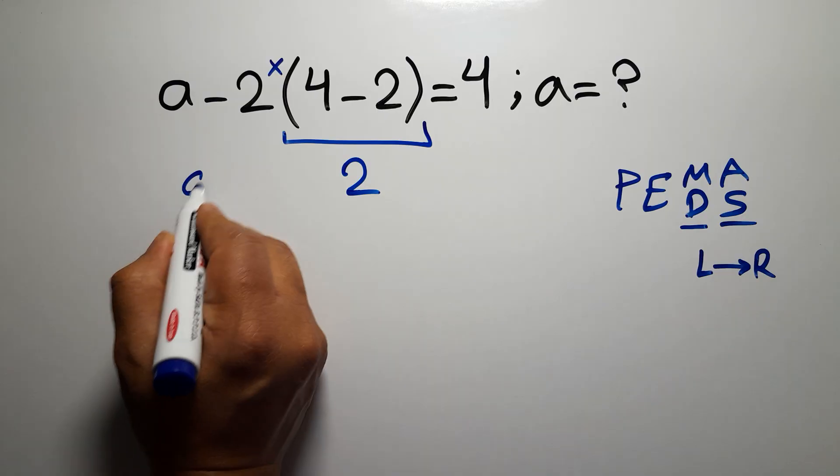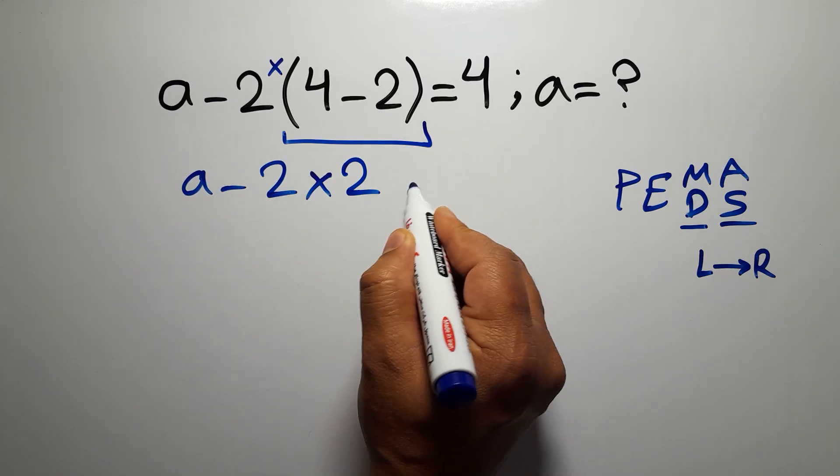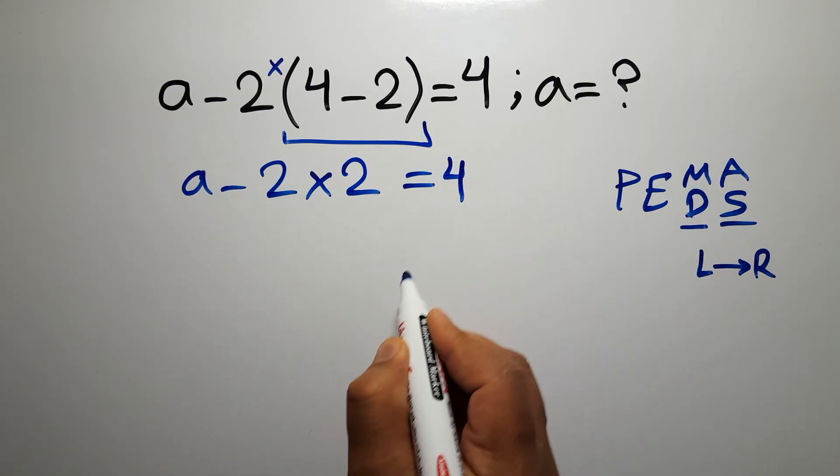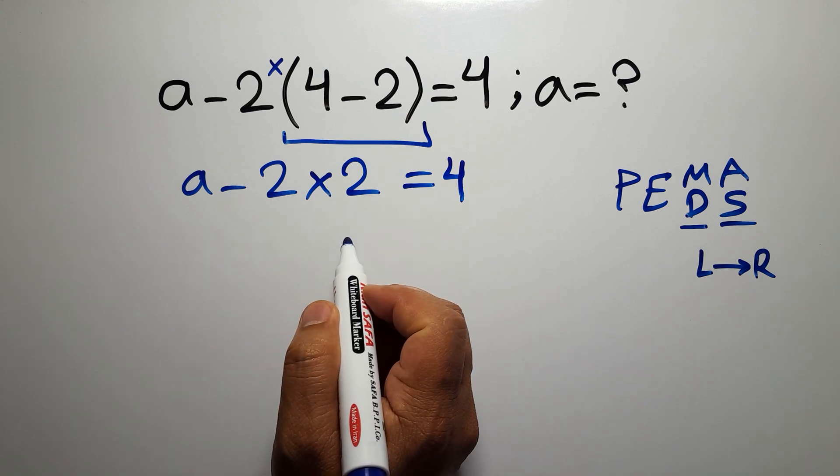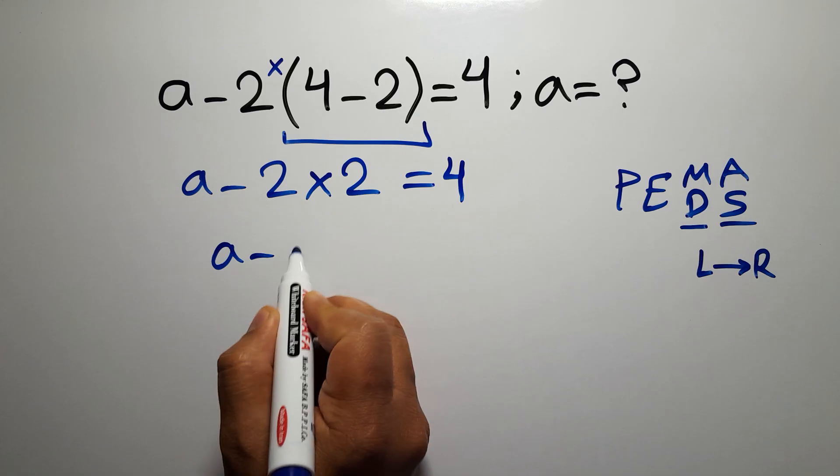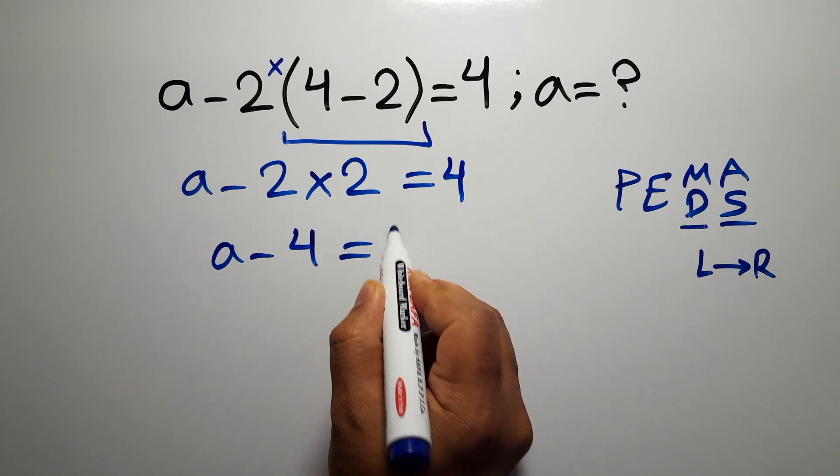So, a minus 2 times 2 equals 4. 2 times 2 gives us 4. A minus 4 equals 4.